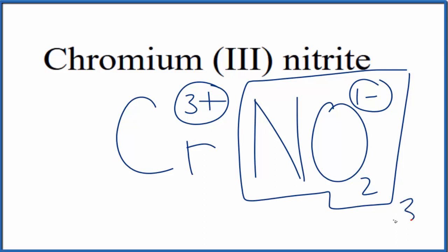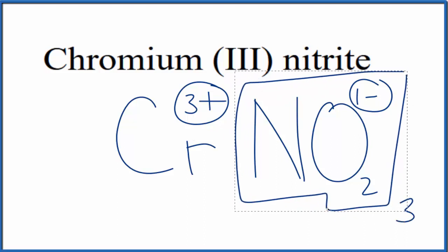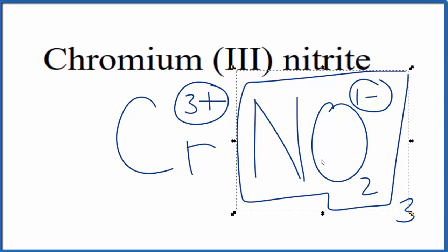So let's put a 3 out here, and then we'll need to replace this here with parentheses, since we have 3 separate nitrite ions.